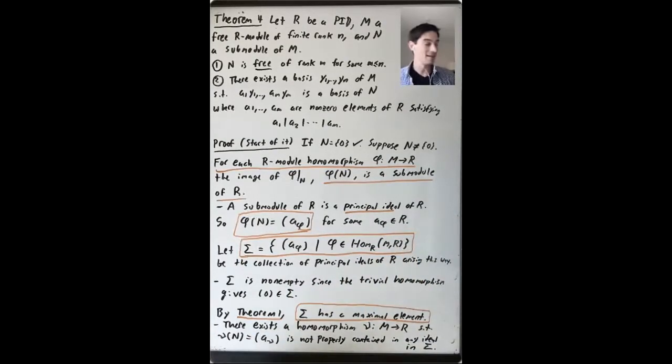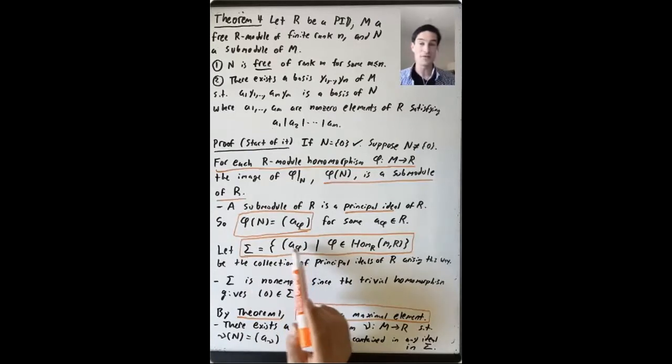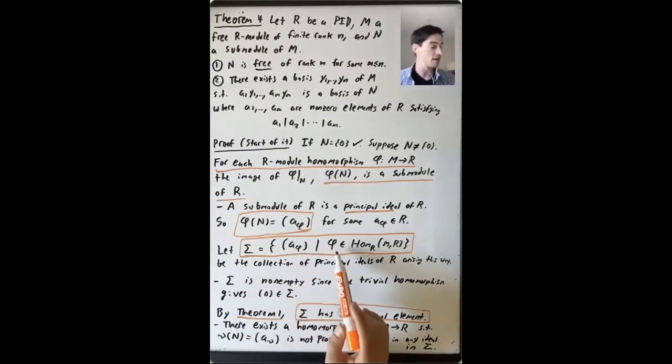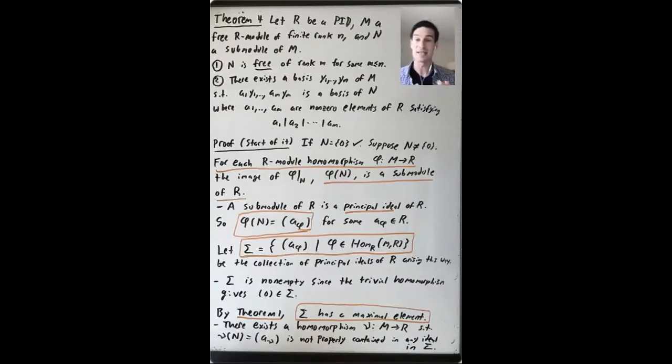The next big idea is to consider the collection of all of these principal ideals. So let's let sigma be the set of all of these ideals generated by A phi, where phi is some R module homomorphism from M to R. So it's a collection of all the principal ideals that arise in this way.